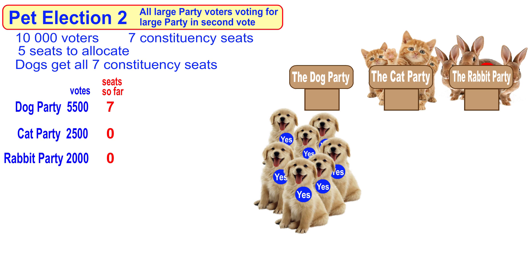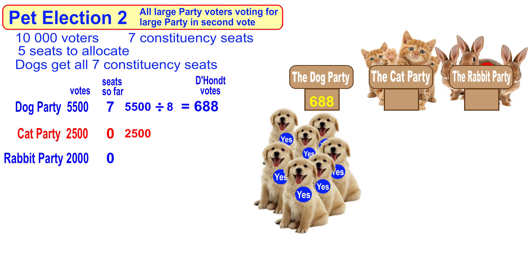The dog party has seven seats so far, so seven plus one is eight — we're going to divide the dog party's vote by eight. So 5,500 divided by eight leaves it with only 688 votes. The cat party has zero seats, so dividing by zero plus one gives you one, leaving the cat party with the same vote of 2,500. The rabbit party is also divided by one, so it stays at 2,000.